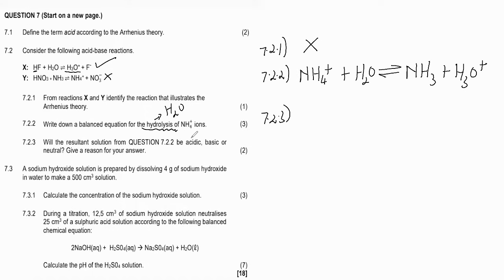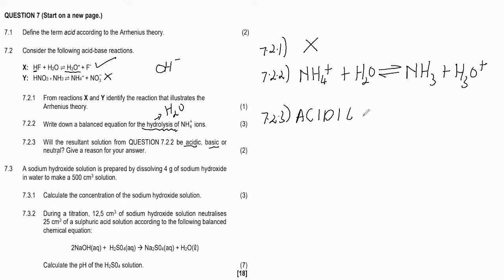7.2.3 asks: will the resultant solution from 7.2.2 be acidic, basic, or neutral? Give a reason. According to Arrhenius, an acid is a substance that produces hydronium ions. Since our reaction produces hydronium ions, the solution is acidic. If it had produced hydroxide ions (OH⁻) instead, we would say it is basic or alkaline. It is acidic because it produces hydronium ions.